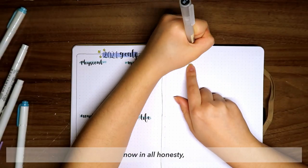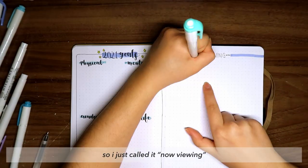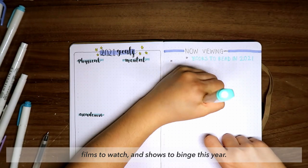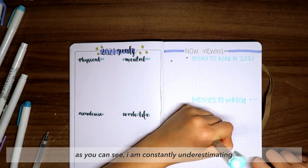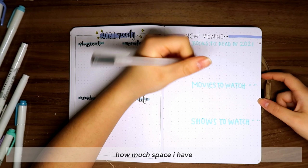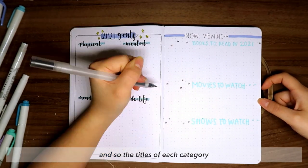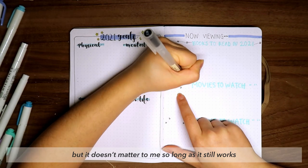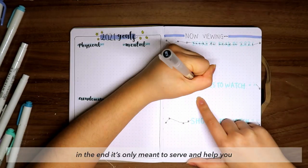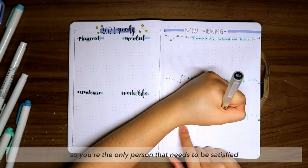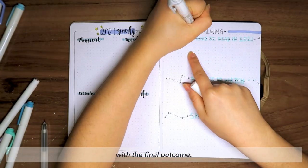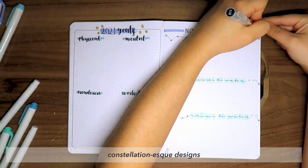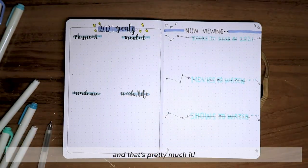Now in all honesty, I wasn't sure what to title this next page, so I just called it 'now viewing.' But it's just a page where I can dump all the books I should read, films to watch, and shows to binge this year. As you can see, I'm constantly underestimating how much space I have, and so the titles of each category are slightly different. But it doesn't matter to me so long as it still works. After all, that's the beauty of bullet journaling - in the end, it's only meant to serve and help you, so you're the only person that needs to be satisfied with the final outcome. Again, I added some little star and constellation-esque designs to split up each category.